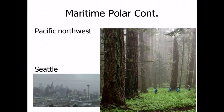Here's what maritime polar might actually look like. If anyone's been to Seattle, it rains there a lot — and there might be a reason related to the maritime polar air mass right off the coast. Lots of moisture is brought in, and if it's cold, it's very easy to form clouds at cold temperatures.